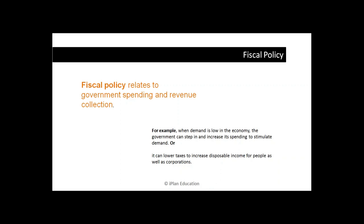Another option could be, instead of increasing expenditure, the government can lower taxes. If government reduces the taxes, the people have more disposable income, so they spend more — they buy luxurious items, have dinner outside, wear new clothes, spend more on education. What happens is your economy moves on. There is more expenditure, so your GDP increases.